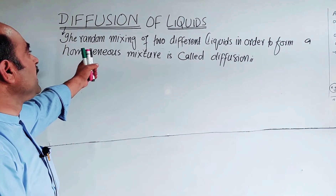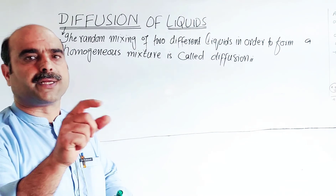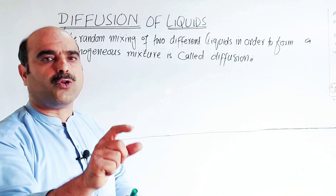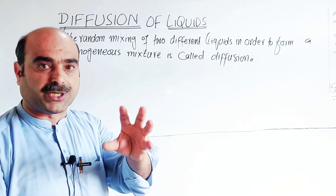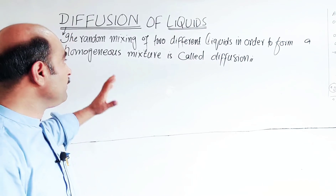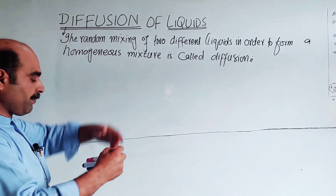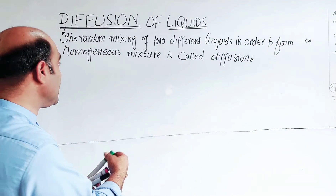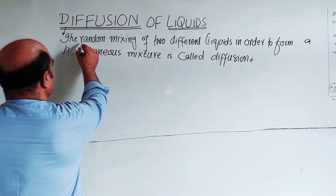Diffusion works such that molecules move from a high concentration region to a low concentration region. The concentration difference is involved in the same way, and when the mixing process occurs, it results in random mixing of the two liquids.